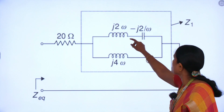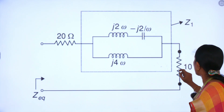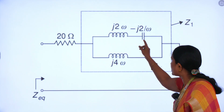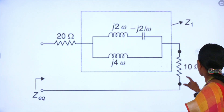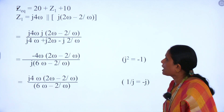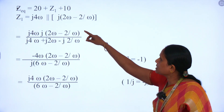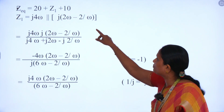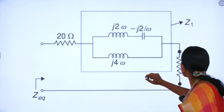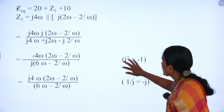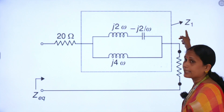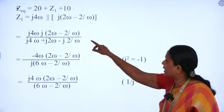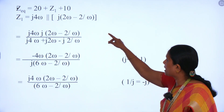So I modify the circuit: 20 ohms, j2ω, −j2/ω, j4ω, and 10 ohms. First, we have to reduce this block into a single impedance Z1 — this series combination of j2ω and −j2/ω is in parallel with j4ω. The total equivalent impedance will be 20 + Z1 + 10. So first I am going to calculate Z1. Z1 = j4ω in parallel with (j2ω − j2/ω).